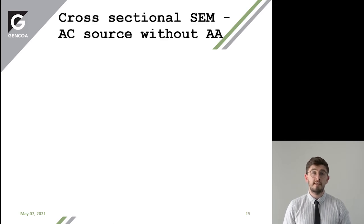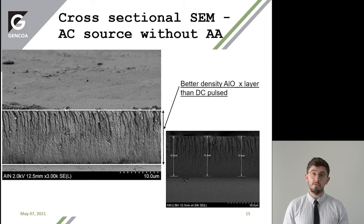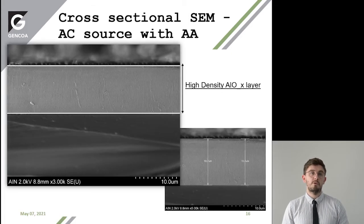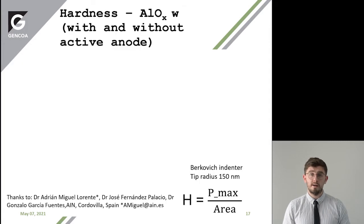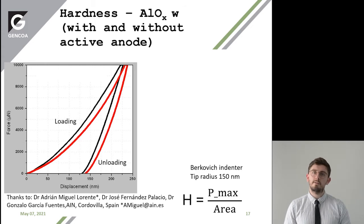Here's a cross-sectional SEM of an aluminium oxide layer produced in an AC system without the active anode — you'll see it's denser than DC pulsed. However, when we compare it to the AC system with the active anode, you can see this improvement in density — much, much more dense. We also examined these samples for hardness: loading a force onto your sample, then unloading it, and the displacement indicates the level of hardness on the sample.